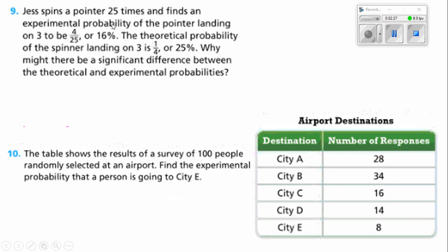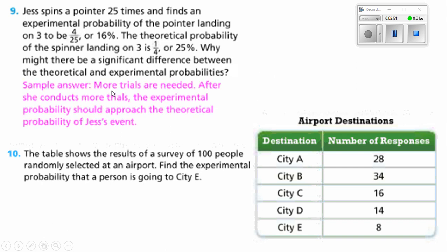Jess spins a pointer 25 times and finds an experimental probability of the pointer landing on 3 to be 4 out of 25 times, or 16%. The theoretical probability of the spinner landing on 3 is 1 over 4, or 25%. Why might there be a significant difference? More trials are needed. After she conducts more trials, the experimental probability should approach the theoretical probability. In other words, the more time she does it, the more she's going to come closer to that 25%.